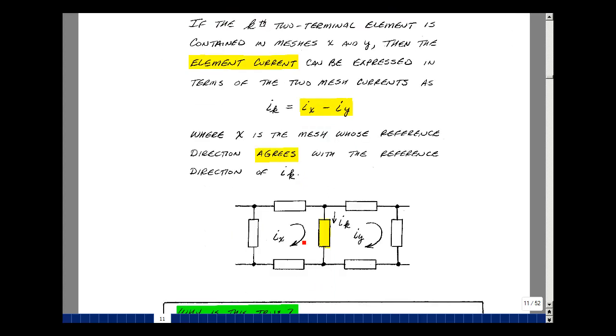So here's a mesh current i_x. Here's the mesh current i_y. And the current in this element, as I've picked it in this direction, agrees with the direction of i_x, but disagrees with the direction of i_y. And that's how we're going to find the current in individual elements that are between meshes.